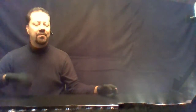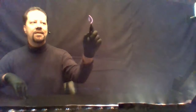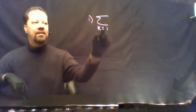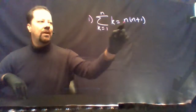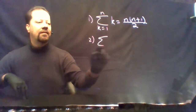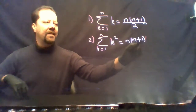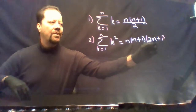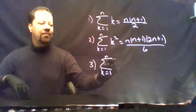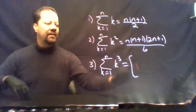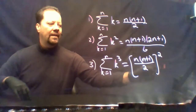On that last problem, you don't know exactly what I'll give you on the actual final exam, so memorize these three formulas. The sum from k=1 to n of k is n(n+1)/2. The sum from k=1 to n of k² is n(n+1)(2n+1)/6. And the sum from k=1 to n of k³ is [n(n+1)/2]².